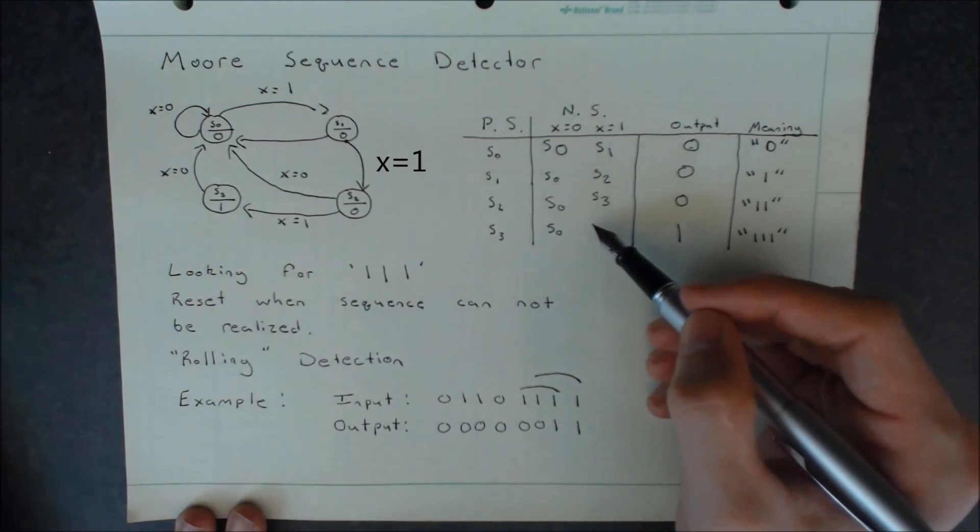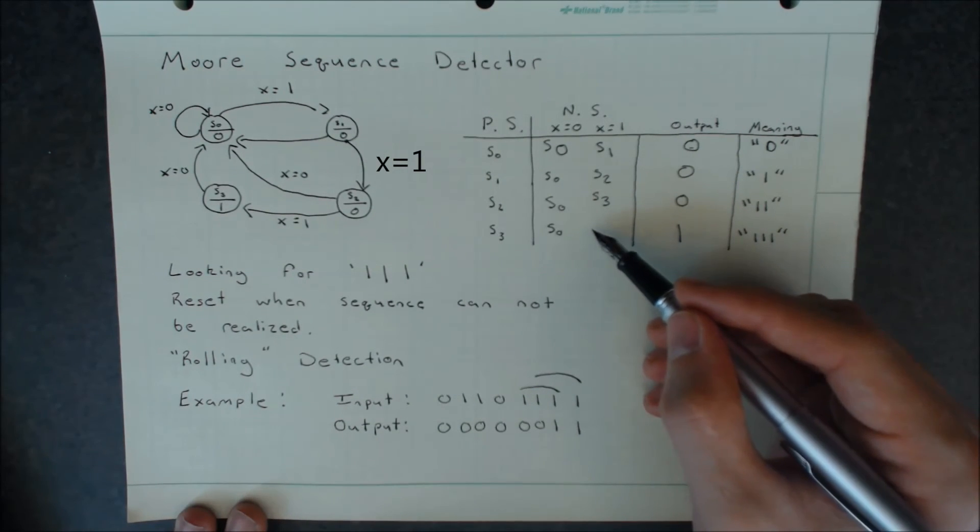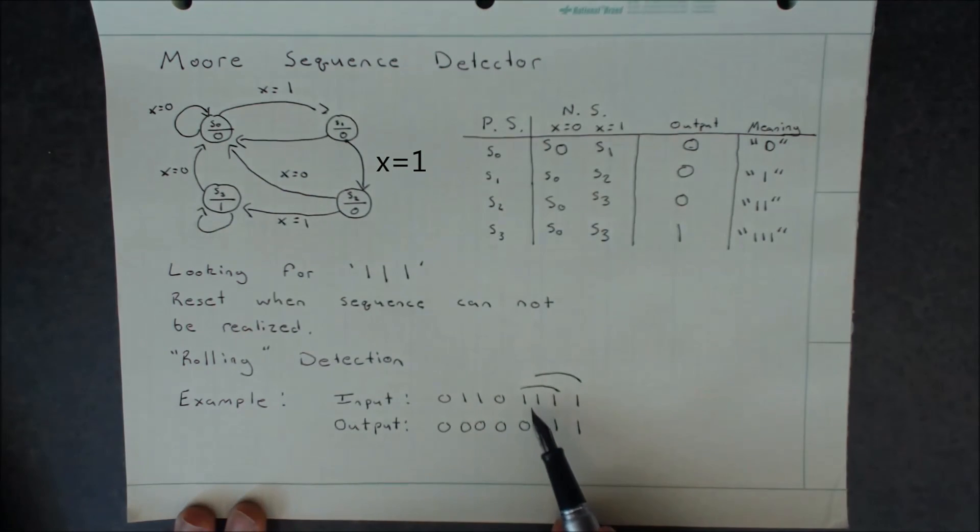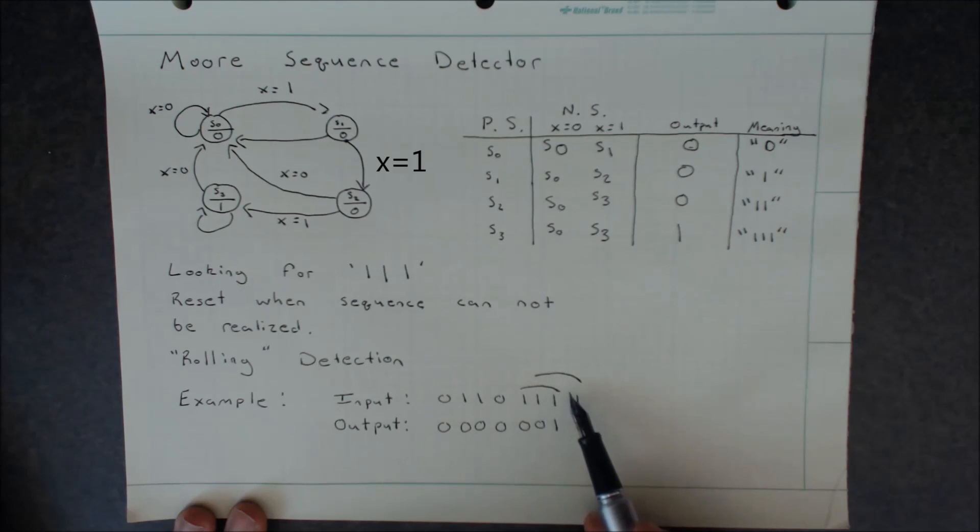However, when we receive another 1, it's slightly different this time as we simply stay in S3. We stay in S3 because, as we saw earlier in this example, we'll continuously output these 1s as long as we have some combination in a row of three 1s.